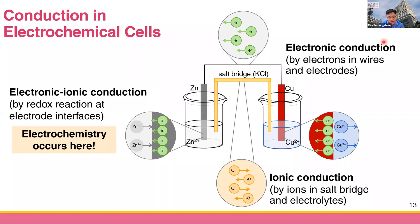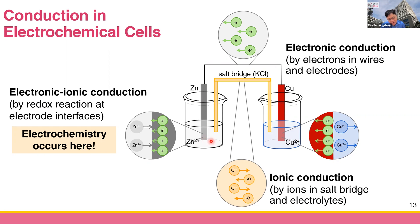So we have three types of electrical conduction in electrochemical cells: electronic conduction, ionic conduction, and electro-ionic conduction. In a galvanic cell, electrons flow from zinc — which gives up electrons to become Zn²⁺ — along the circuit to the copper electrode, where Cu²⁺ receives the electrons at the interface. To complete the circuit, ions in the salt bridge flow to balance the charge.